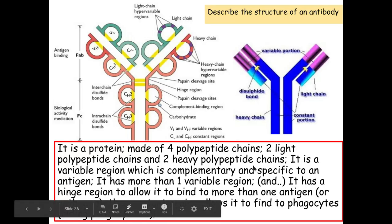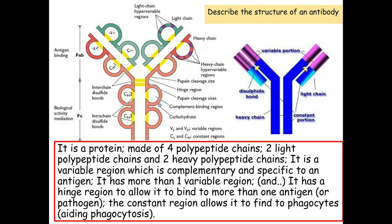Here we have two diagrams of an antibody. Don't forget that antibodies are made from plasma cells, and we looked at how they are made through the immune response in a couple of videos ago in case you want to go back and recap that. The one on the left is a slightly more complicated diagram and the one on the right is a slightly simpler version, both showing an antibody.